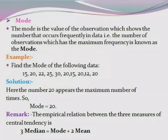One important note: the empirical relation between the three measures of central tendency is 3 Median = Mode + 2 Mean.